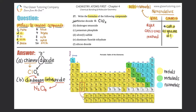Now, the question is: do you simplify? I see a two and a four — maybe divide both by two like we do in ionic compounds. The answer is no. For ionic compounds you will simplify, but for covalent compounds you never simplify. Whatever prefix they give you, that's what it is. So the answer is N₂O₄.